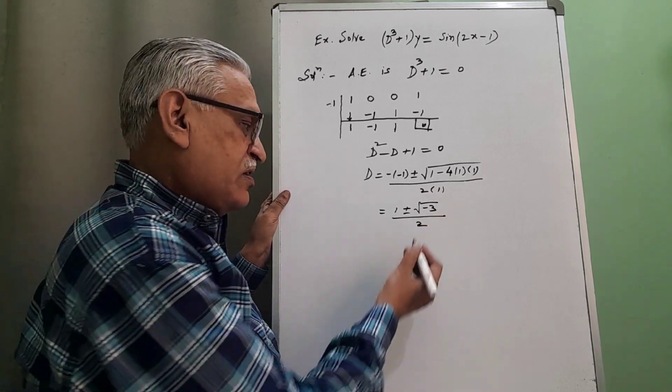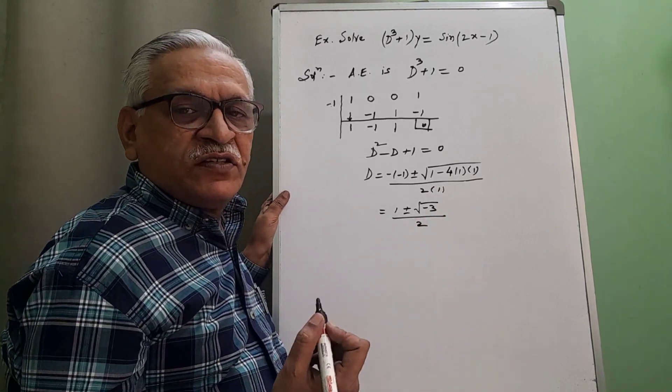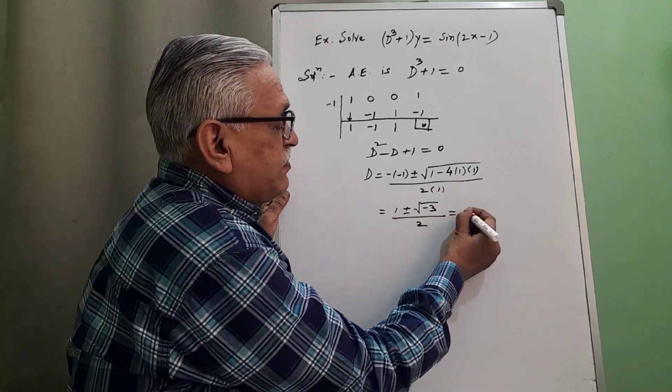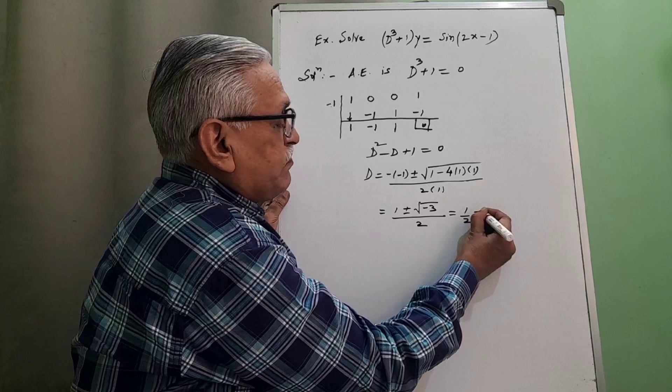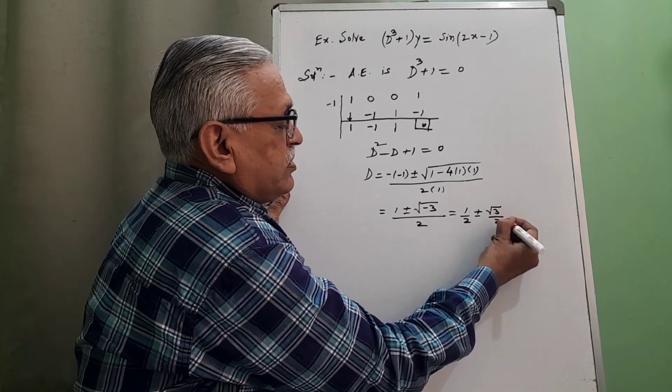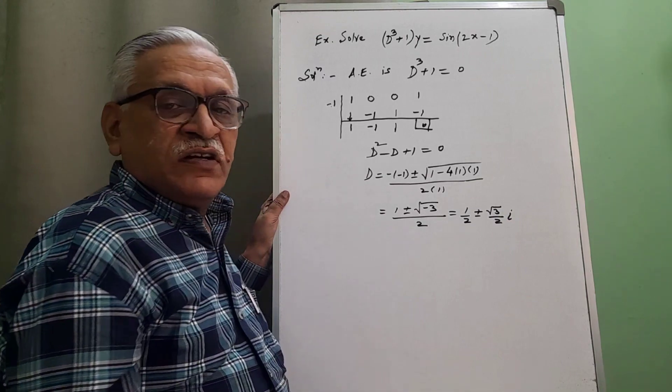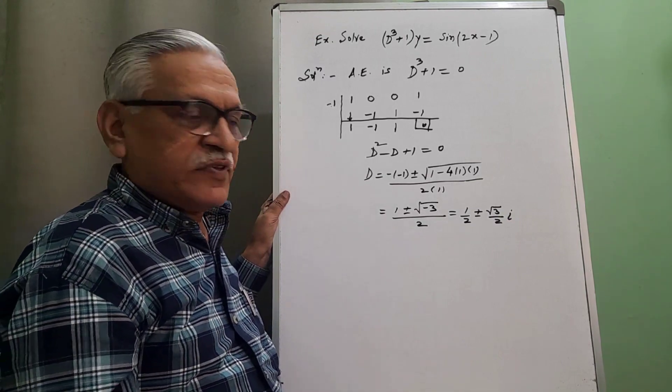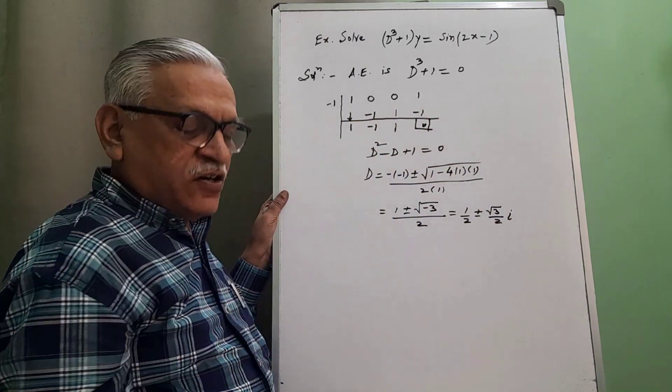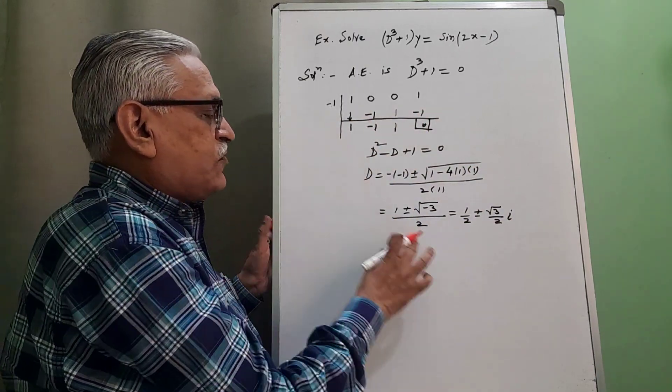And dividing by 2 separately, we get 1/2 plus minus root 3 by 2 into i. Roots are imaginary. These two roots are imaginary, and the first one is a real root, the combination of two types of roots.